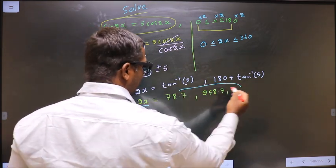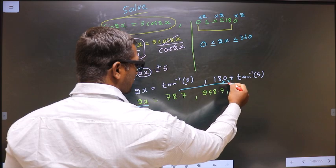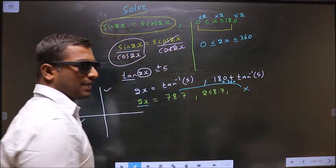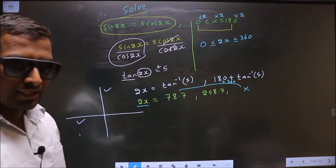To get another value, I have to add 360 to this. That will not lie in this interval, so I do not need to consider that.